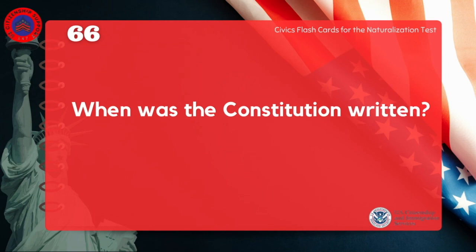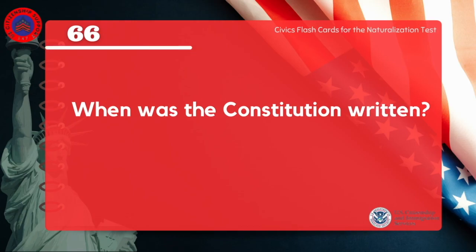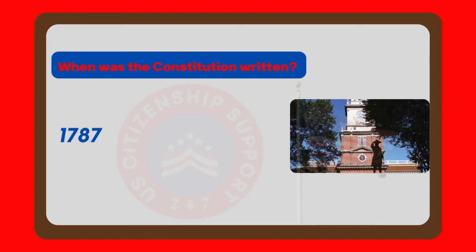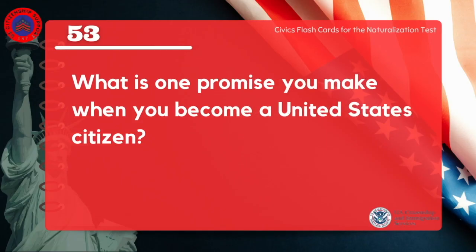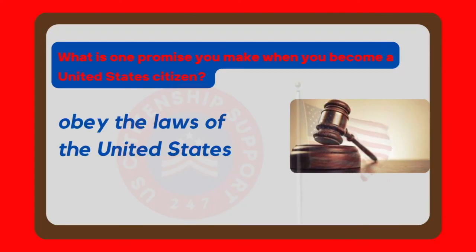When was the Constitution written? 1787. What is one promise you make when you become a United States citizen? Obey the laws of the United States.